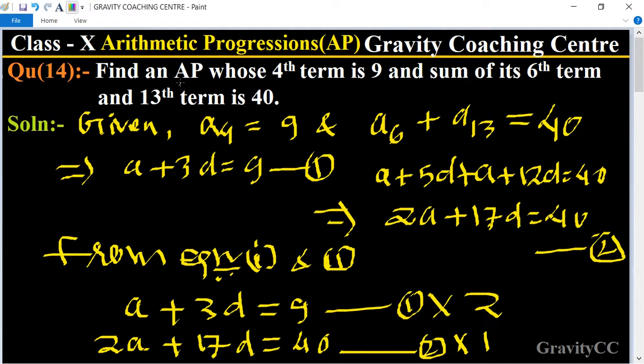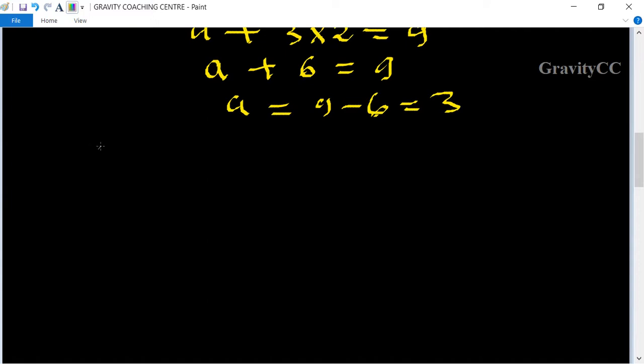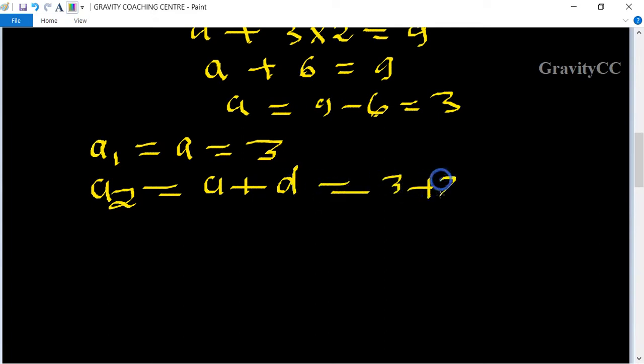So to find the AP: a₁ equals the first term which is a = 3. Second term equals a + d, which is 3 + 2 = 5.